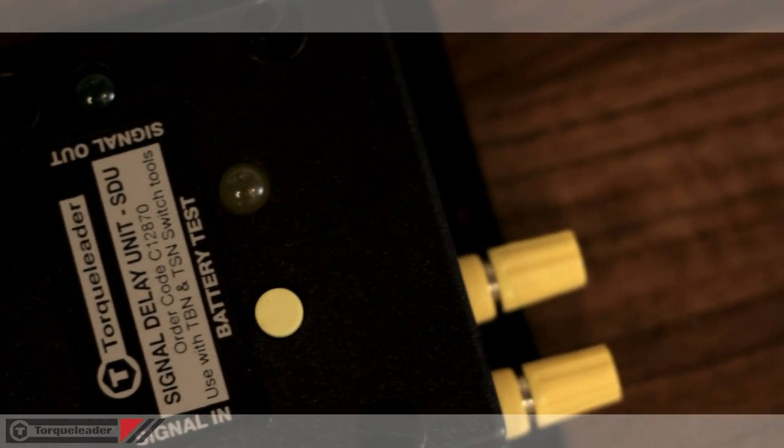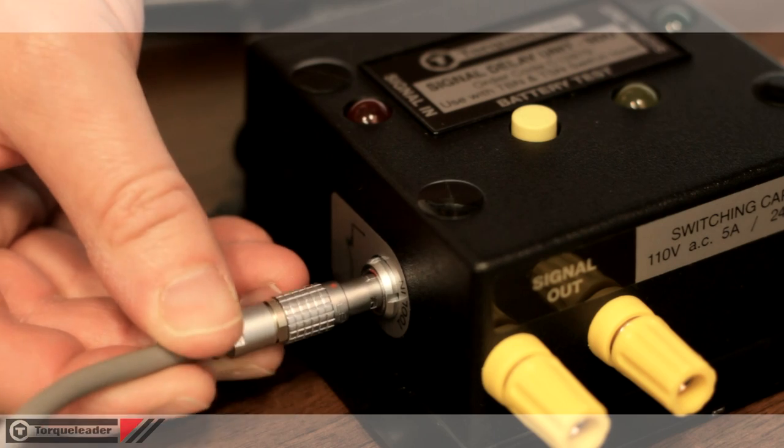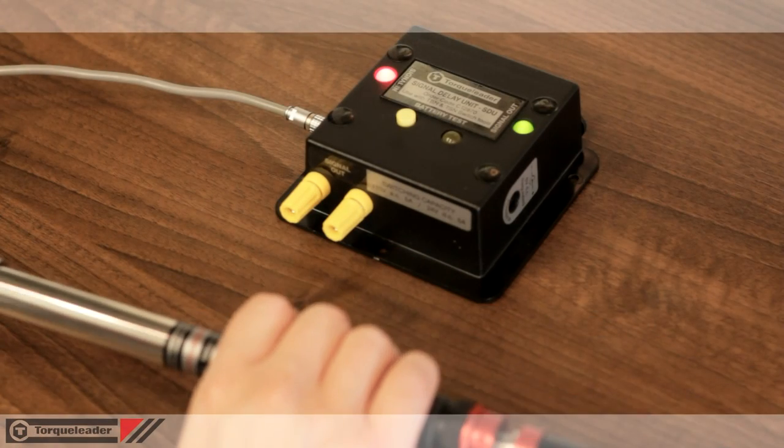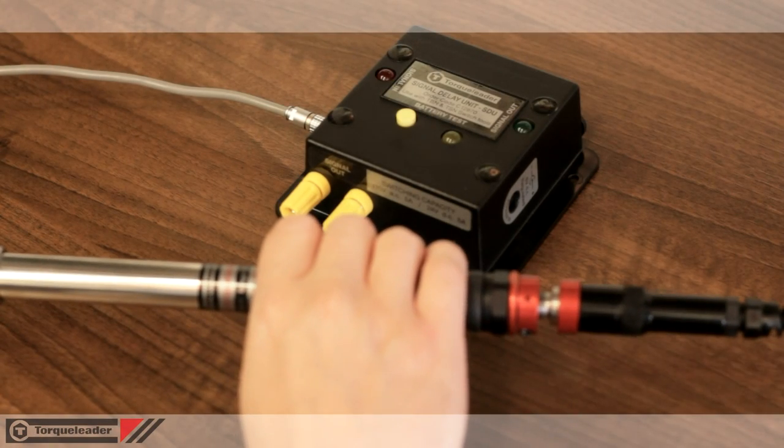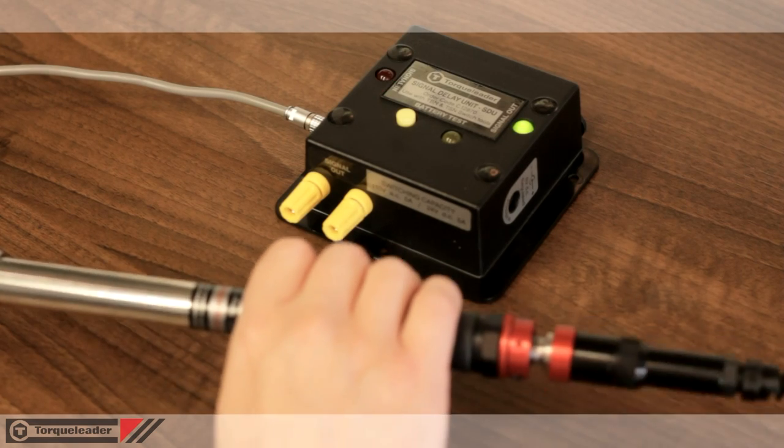In addition, a signal delay unit may be placed between the switch tool and the production line control system in order to prolong the signal duration.